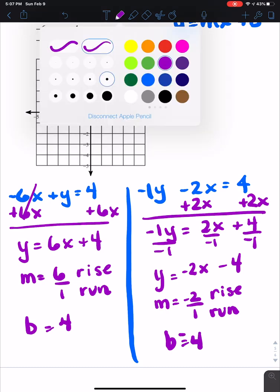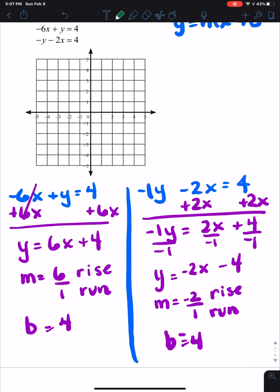So let's start graphing with this first one here. So it starts at a positive 4, and the slope is 6 over 1. And I don't have room to move up 6 and over 1, so I'm going to move backwards. So 1, 2, 3, 4, 5, 6 over 1.